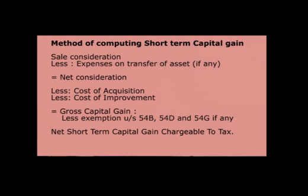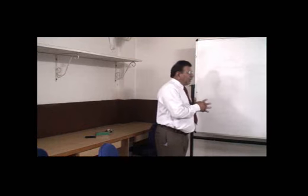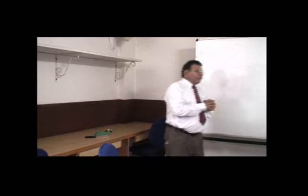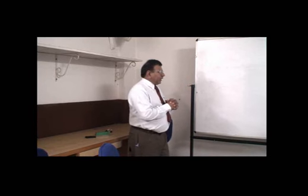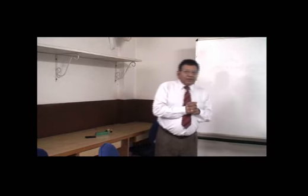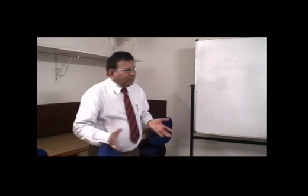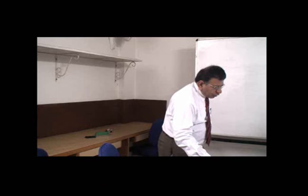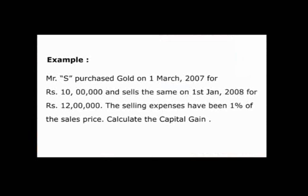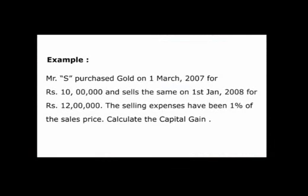From the net consideration we deduct the cost of acquisition of the asset and the cost of improvement of the asset, to get the gross capital gain. If any exemption is available under section 54B or section 54G, it will be deducted from the gross capital gain, and on the net short term capital gain we will have to pay the tax. The process is very simple — we can learn it with an example. Mr. X purchased gold on 1st March 2007 for Rs. 10 lakhs.